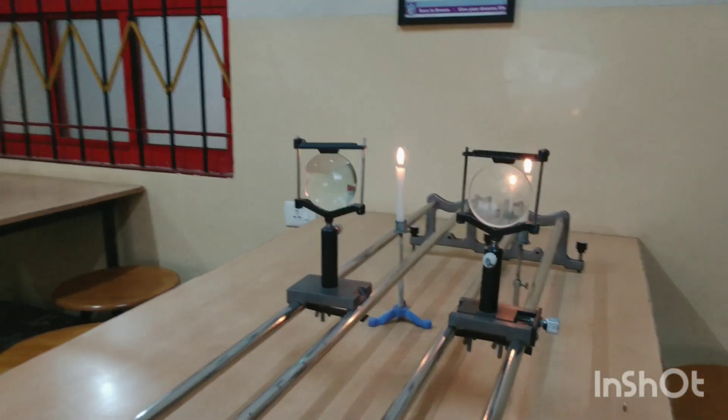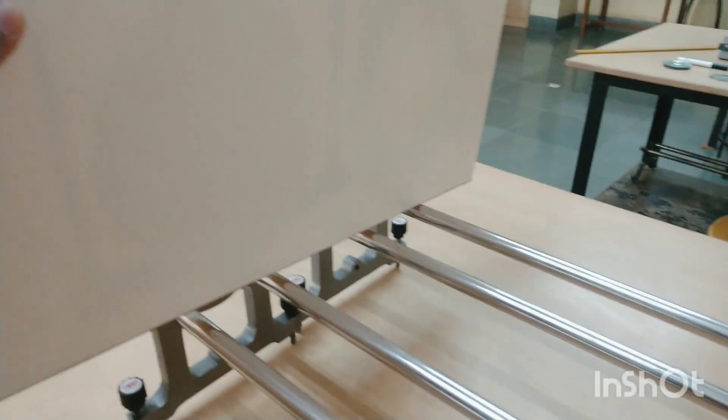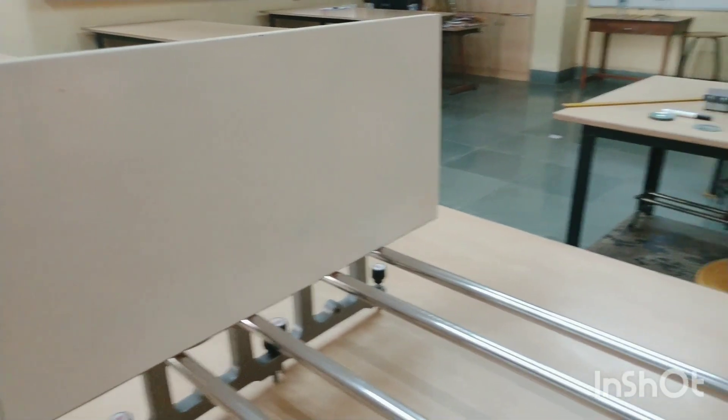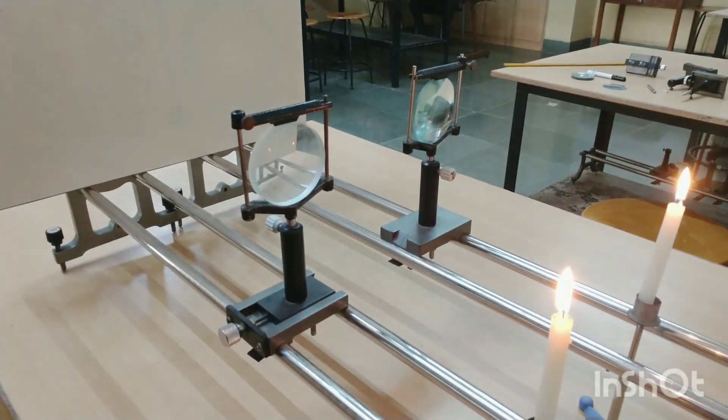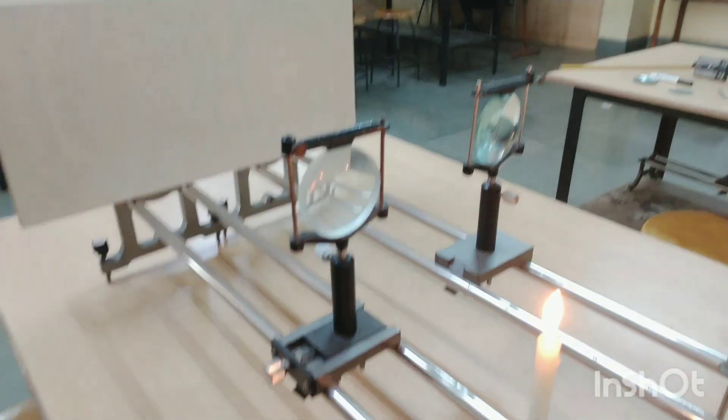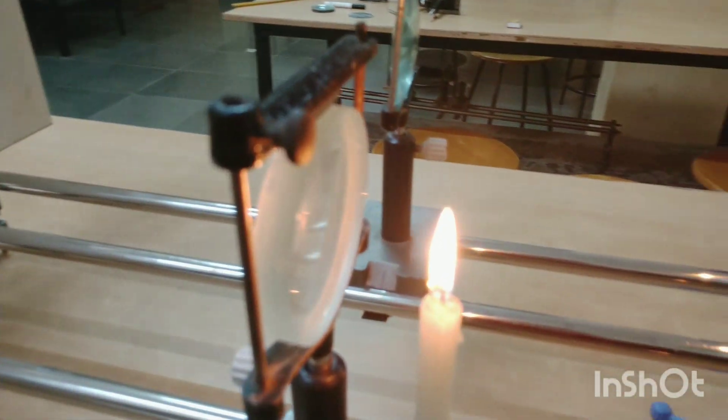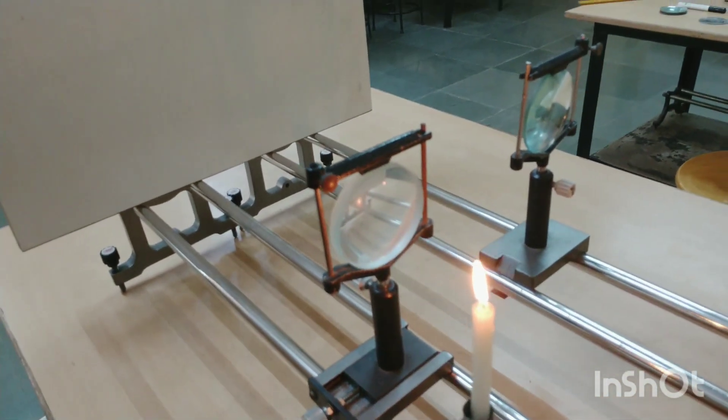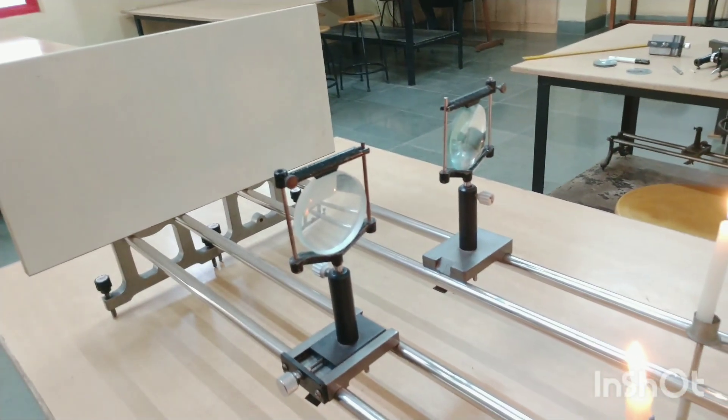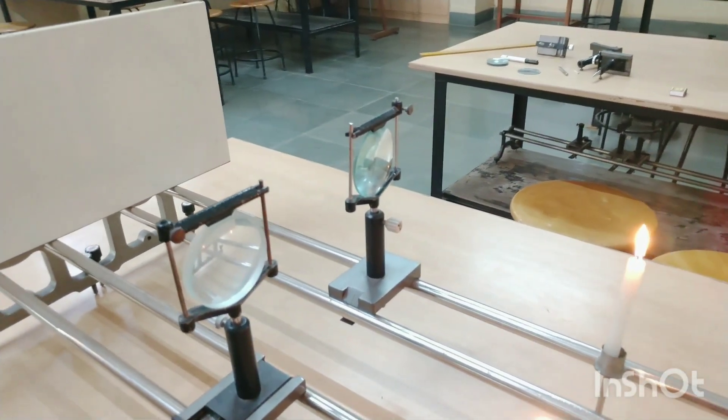Now let us try to see if we can project these images on this white screen. Let me put up the screen. Here we go. Let me try first with the concave lens. I'm not getting any image on the screen. Let me try to move the candle closer towards the concave lens. Nothing. I brought the candle so close and I'm getting nothing on the screen. Let me take it away. I've gone so far but absolutely nothing.